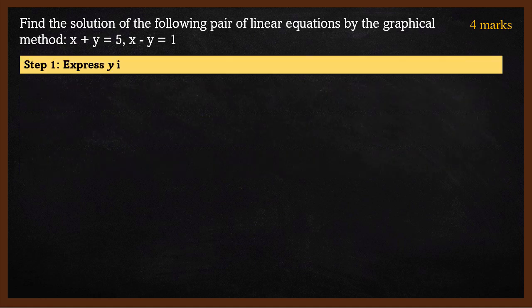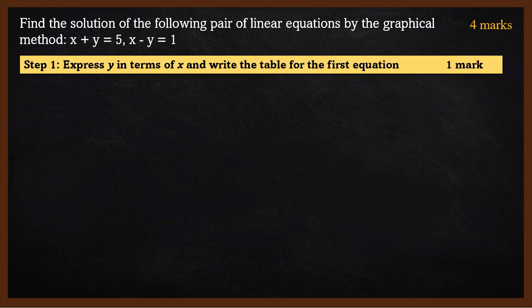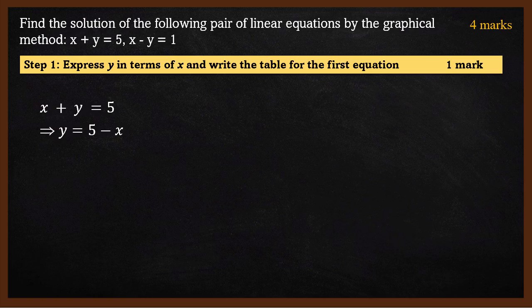Step 1: Express y in terms of x. We will write the table for the first equation. The first equation is x plus y equals 5. Moving x to the right-hand side, we get y equals 5 minus x.